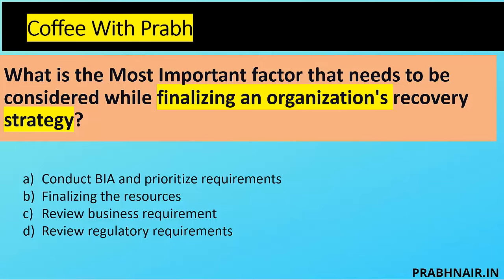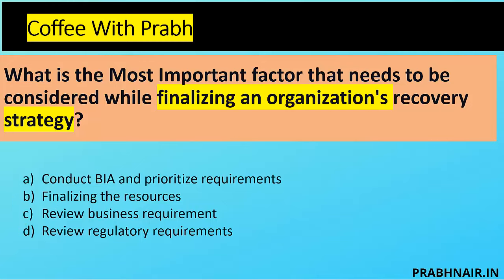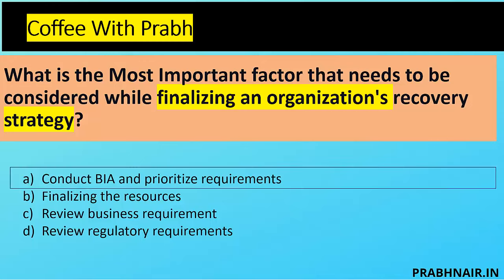Option B is finalizing a resource — until we identify what is critical and what is not, we cannot finalize the resource. Option C is review business requirements, and D is review legal and regulatory requirements. Reviewing business and regulatory requirements can both be done within the BIA, and based on BIA only we can finalize resources. That's why the answer is A.